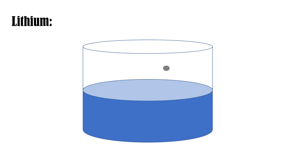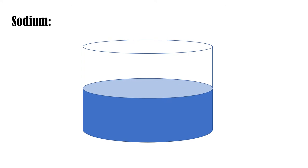Lithium floats and will react pretty steadily and will eventually disappear. Sodium, which is below lithium in Group 1, reacts a little more violently. At first, the sodium will dissolve until a ball remains, which will then move around the surface. The fizzing is more rapid and the hydrogen gas that is produced this time may burn with an orange flame before the sodium eventually disappears.